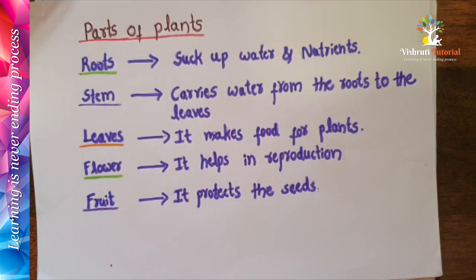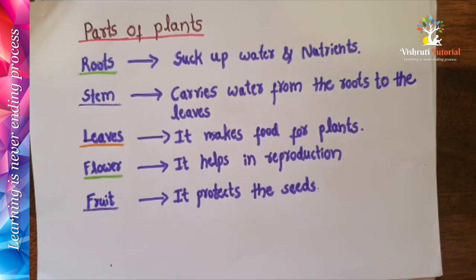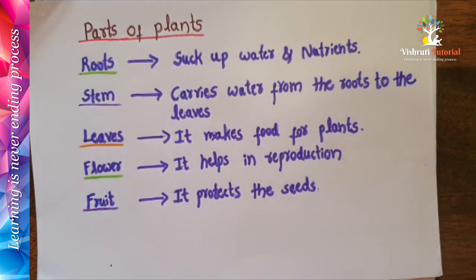The leaf makes food for the plant. The flower helps in reproduction. Next, fruits — fruits protect the seeds. Always remember that fruits protect the seeds. The seed is planted in the soil, and the seed helps to make a new plant.